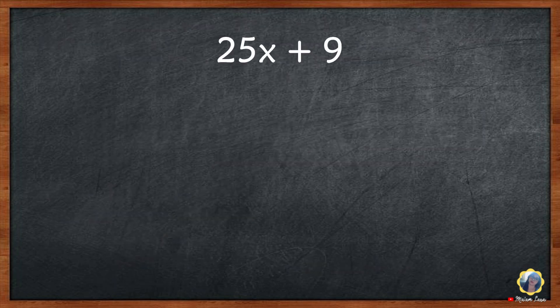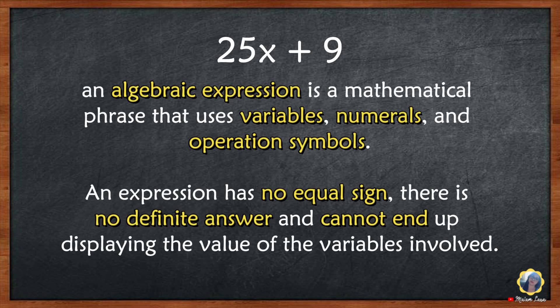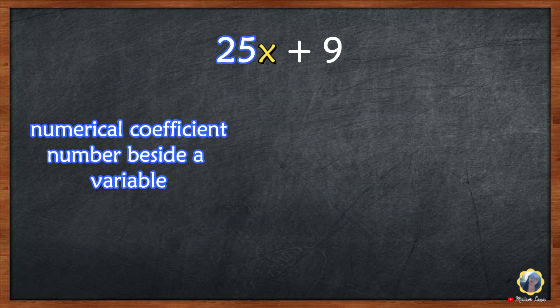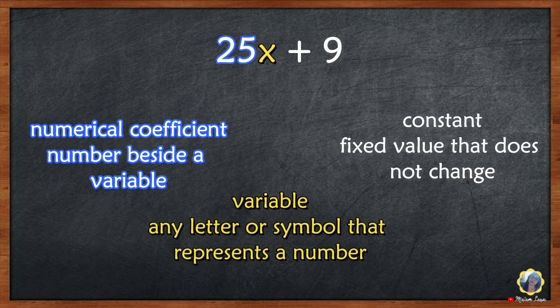25x plus 9 is an algebraic expression. An algebraic expression is a mathematical phrase that uses variables, numerals, and operation symbols. An expression has no equal sign, has no definite answer, and cannot end up displaying the value of the variables. In our example, 25x plus 9: 25 is the numerical coefficient, x is our variable, and 9 is the constant.